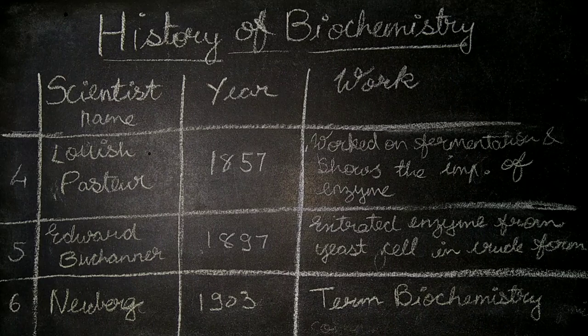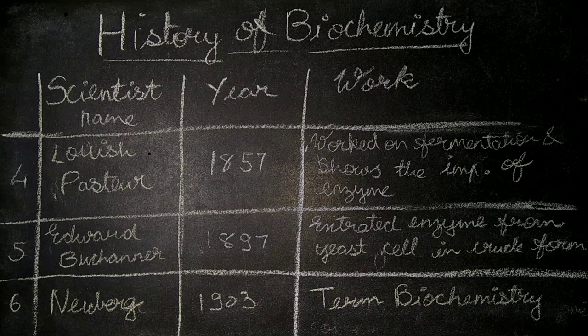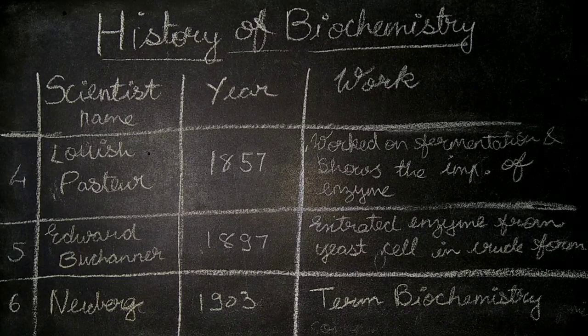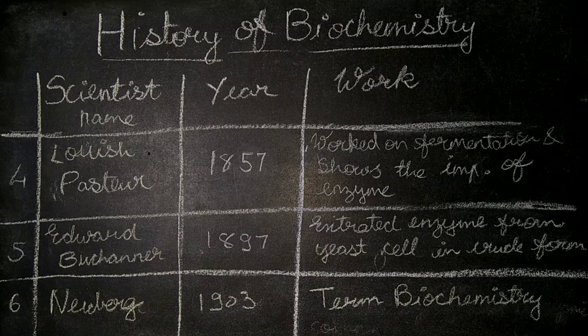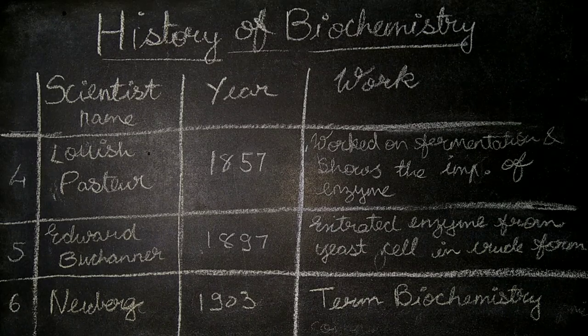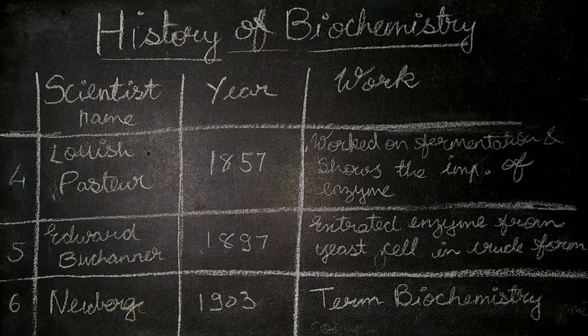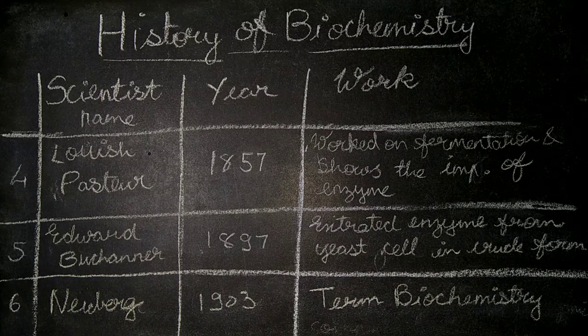Fourth is Louis Pasteur in the year 1857, who worked on fermentation and showed the importance of enzymes. Fifth is Eduard Buchner in year 1897, who extracted enzymes from yeast cells in crude form. Sixth is Neuberg in 1903, who termed the glycolysis pathway.